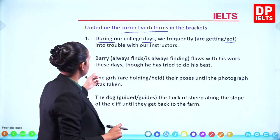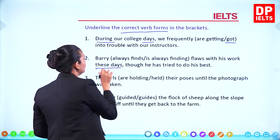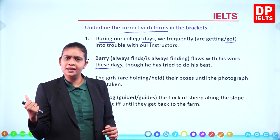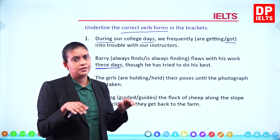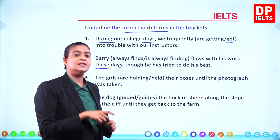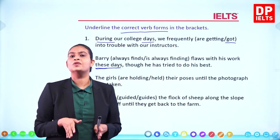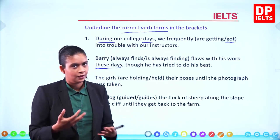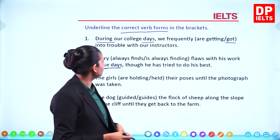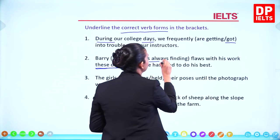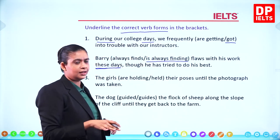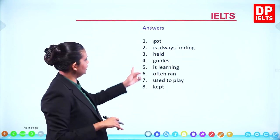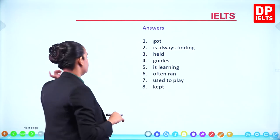'Barry is always finding flaws with his work these days.' When you say 'these days,' is it happening at the moment? Yes. So it cannot be in the past. We use the present continuous because it is happening at the time of speaking and tends to be temporary. The answer is 'is always finding.'